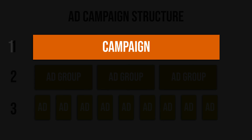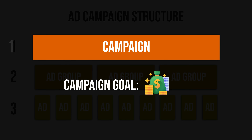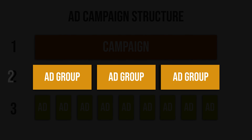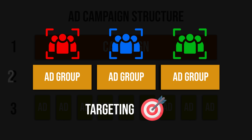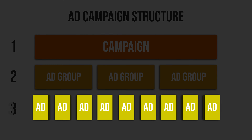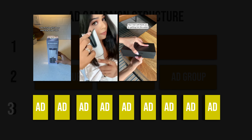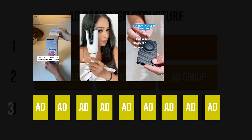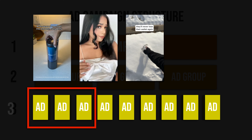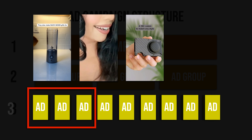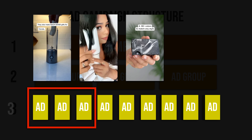On the campaign level, we tell TikTok what the main goal of our campaign is — in our case, sales on our store. On the ad group level, we define who we want to show our ads to, and we can have multiple ad groups in the same campaign to test different audiences. On the ad level, we create the actual ad that TikTok users will see in their feed, and we can have multiple ads in one ad group to test which ads result in the most sales.